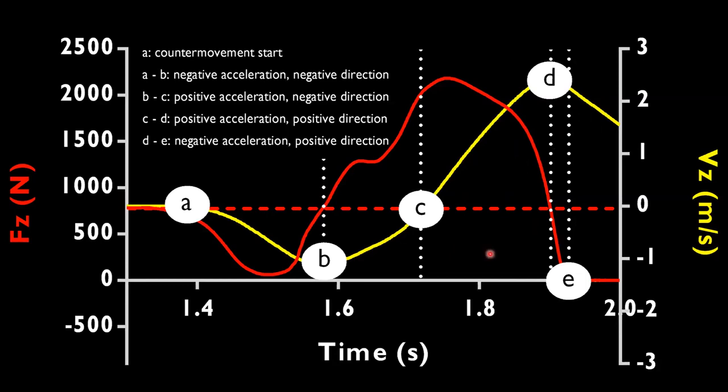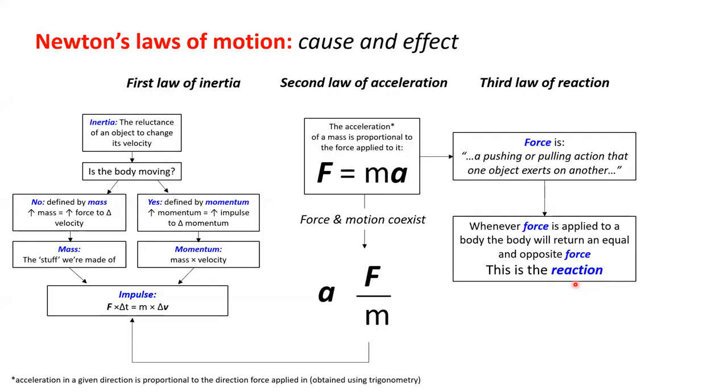That pretty much forms the basis of any kind of analysis that we might want to do, because from this we can calculate all sorts of different types of variables. We can calculate it for the whole of the contact phase from a to e, or we can calculate it for the unweighting, the braking eccentric phase, the propulsion phase, or indeed all of the concentric phase. I'll go on to a little bit more detail in a moment about how you can most effectively start thinking about what variables you might want to look at.